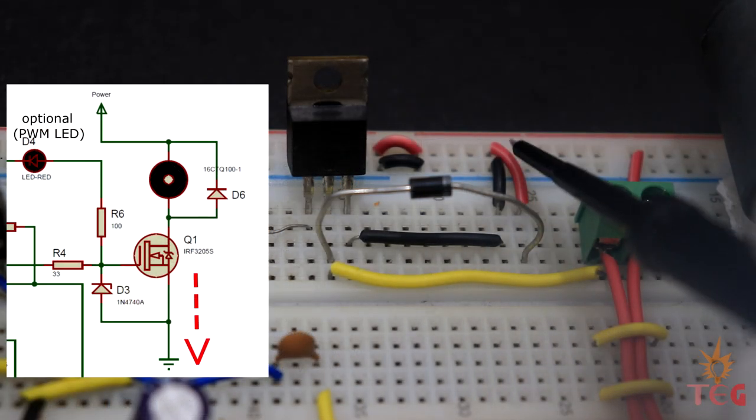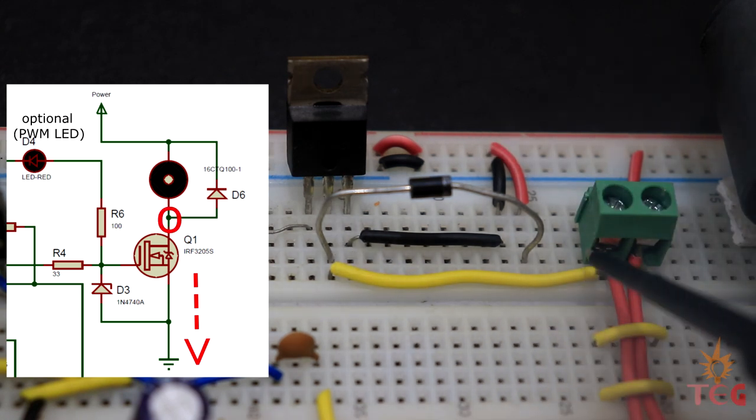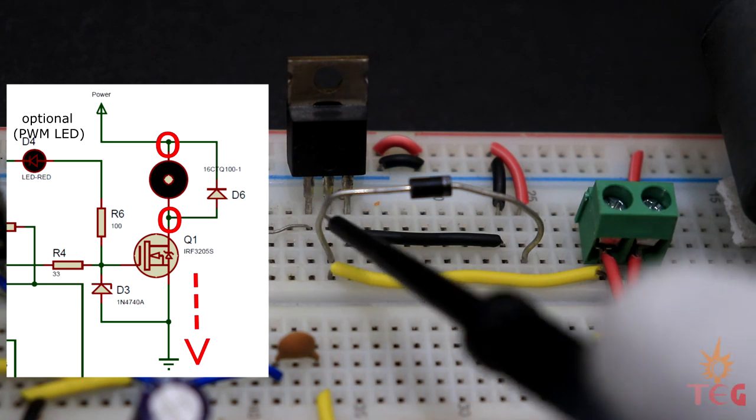Source is grounded and drain is connected to one terminal of the output whereas other terminal to 12 volts. This way the motor is connected between positive of the 12 volt supply and drain of the MOSFET.